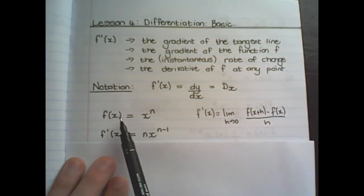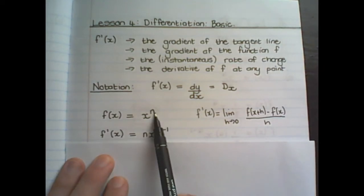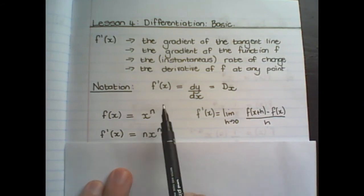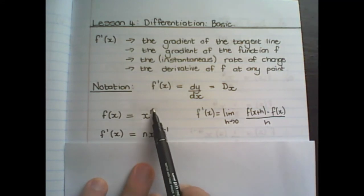So let us say I have a function f(x) equals x to the power of n. The rule says that to find a derivative, I multiply the value in front of x with the exponent, and I simply subtract 1 from the exponent.